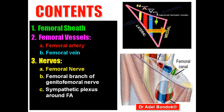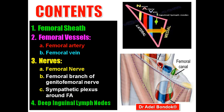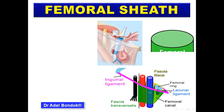Remember: Vein, Artery, Nerve from medial to lateral. The most medial is the femoral vein, the most lateral is the femoral nerve, and in the middle the femoral artery. And deep inguinal lymph nodes. So the contents are: femoral sheath, femoral vessels (femoral artery and femoral vein), nerves (femoral nerve, femoral branch of the genitofemoral nerve, sympathetic plexus around the femoral artery), and deep inguinal lymph nodes.